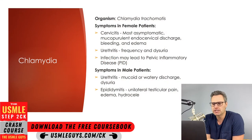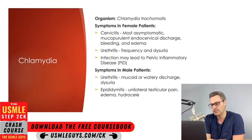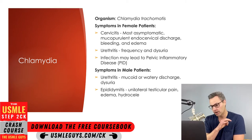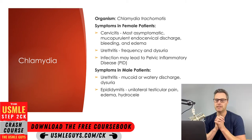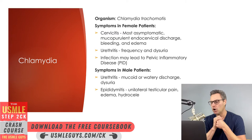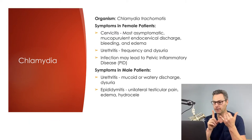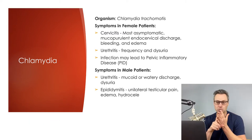The first one we're going to talk about is chlamydia. This is contracted via infection with Chlamydia trachomatis. Female patients may experience symptoms such as cervicitis; however, most will be asymptomatic. If symptoms are present, then mucopurulent endocervical discharge, bleeding, and edema may all be present. If urethritis is present, the patient may experience urinary frequency as well as dysuria.